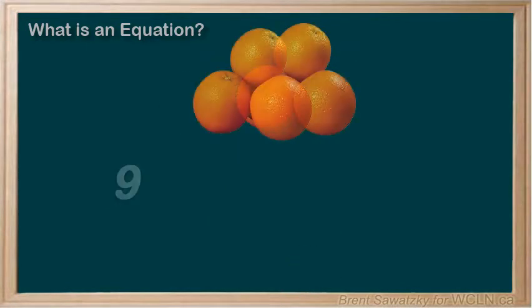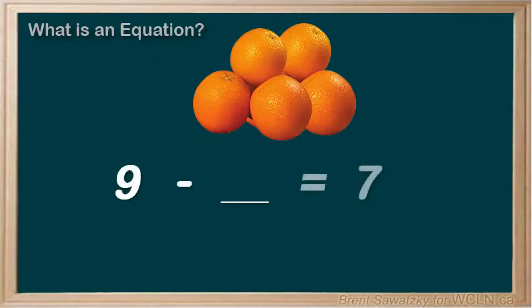If you had 9 oranges, and your friend took some, and afterwards you see that you have 7 oranges left, how many oranges did your friend take? We can also write this one as an equation. You started off with 9, and you lost some, so a minus, and we could put a blank again for the unknown, or we could use a picture of your friend for the unknown, or we could even just put an F for friend. It doesn't matter how we show the unknown. In the end, we know that we're left with 7 oranges.